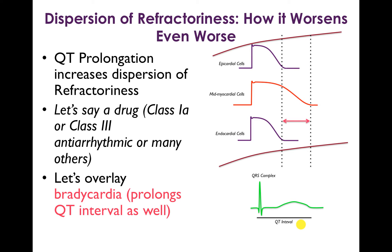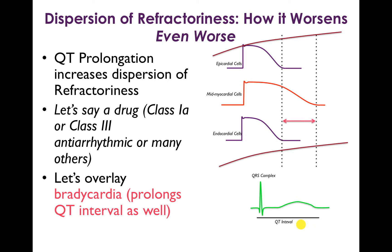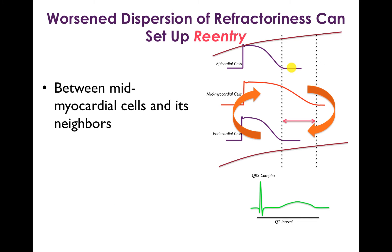If you layer on another influence, such as bradycardia, which also prolongs the QT interval, you can get even worsened dispersion of refractoriness. So now the action potential durations are even longer and the dispersion of refractoriness is even greater. At this point in the cardiac cycle, some cells are ready to conduct again and some cells are not. Namely, the midmyocardial cells are still in the process of repolarizing while the epicardial and endocardial cells are pretty much ready to conduct again. This can set up re-entry between the midmyocardial cells and their endocardial or epicardial cell neighbors.